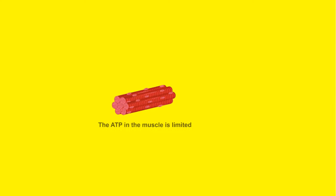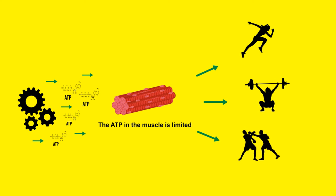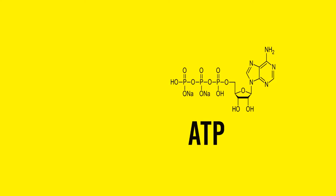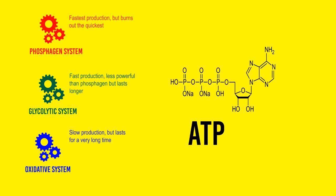The ATP stored in the muscle is limited, so your body has to continually produce it like a fast-working factory to continue working. We might have a race to run, heavy weights to lift, a boxing match, a football game — it doesn't matter. ATP needs to be provided over and over again throughout an activity. And this ATP can be restored with three different energy systems: the phosphagen system, the glycolytic system, and the oxidative system.